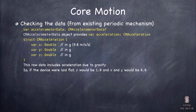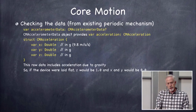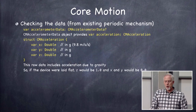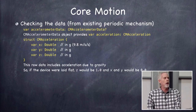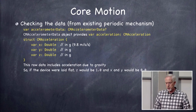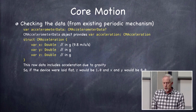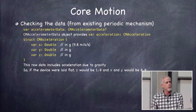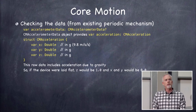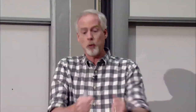X goes across the device, Y is up and down through where the home button is, and Z is down through the back. If the device is sitting flat on a table, Z would be 1.0g because the only acceleration is gravity — 9.8 meters per second squared. If you hold it upright with the home button down, Y experiences 1g and X and Z are zero. Shake it around and you get all kinds of random numbers, potentially much greater than 1g.